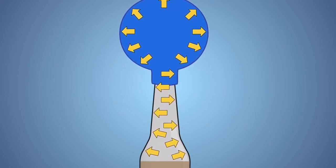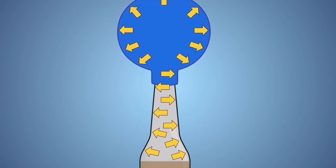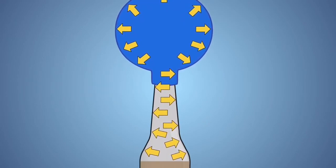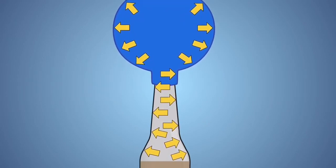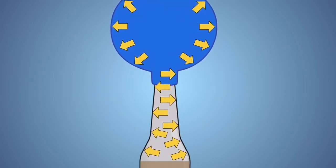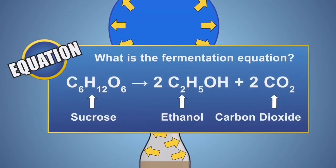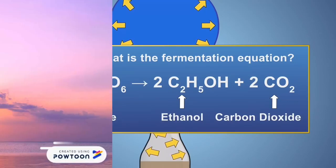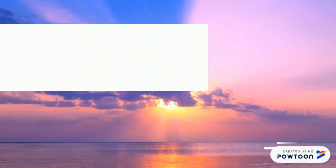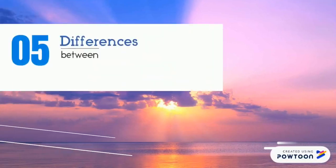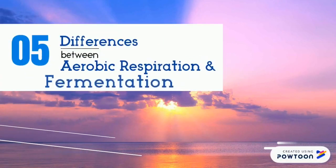As the yeast consumes more sugar and produces more carbon dioxide, the pressure inside the bottle and balloon increases. This pressure presses on the walls of the balloon, causing it to expand and grow. The equation for this reaction: the reactant sugar (sucrose) is on the left, and the products ethanol and carbon dioxide are on the right.